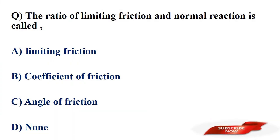The ratio of limiting friction and normal reaction is called? Options: limiting friction, coefficient of friction, angle of friction, none of those. Answer: option B, coefficient of friction. The ratio of limiting friction and normal reaction is called coefficient of friction.